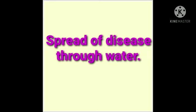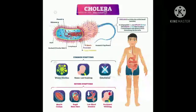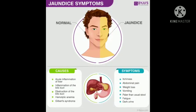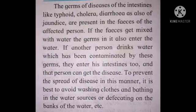Now, the second way diseases spread is through water. A lot of diseases spread through water. The germs of diseases like typhoid, cholera, diarrhea, and jaundice are present in the feces of the affected person. If the feces get mixed with water, the germs also enter the water. If other people drink that same contaminated water, the germs enter their intestines and the person can get the disease.